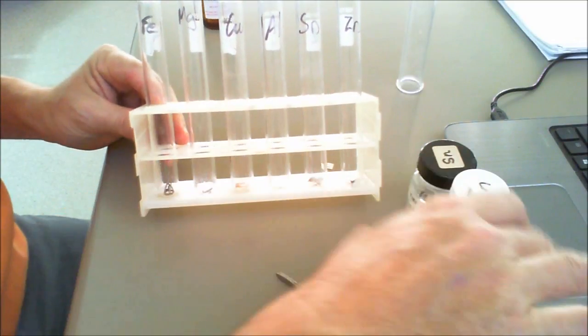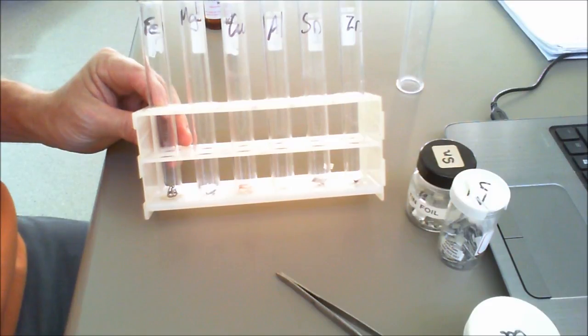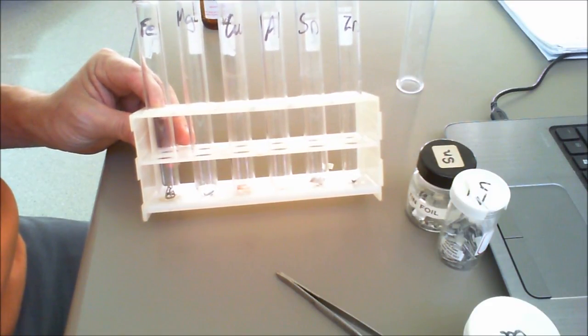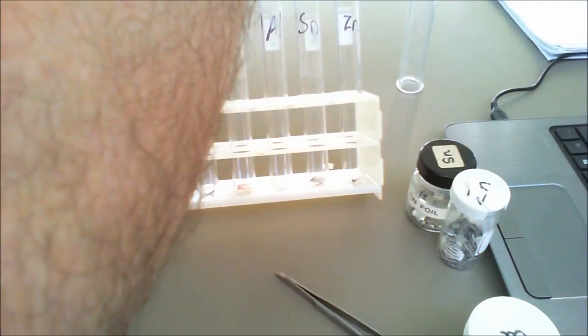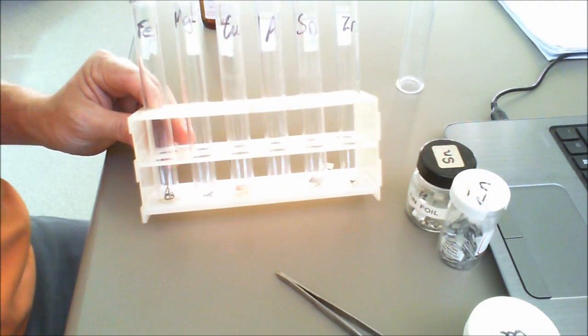So we have iron, magnesium, copper, aluminum—and I forgot to put an aluminum piece in there, so I'll just chuck a couple of aluminum pieces in—tin, which is Sn, and zinc.